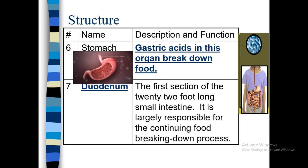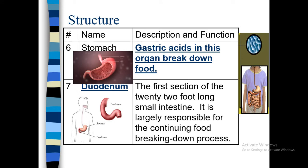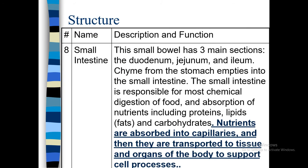Number seven is the duodenum — the first section of the 22-feet-long small intestine. It is the starting piece of the small intestine. The small intestine is about 20 to 22 feet long. It is largely responsible for containing the food breakdown process and is directly connected to the stomach. This small bowel has three main sections: the duodenum, jejunum, and ileum.